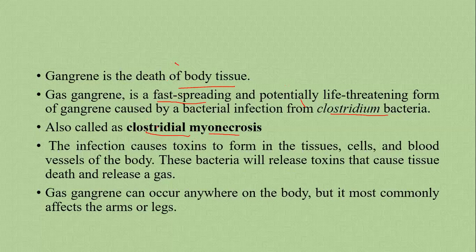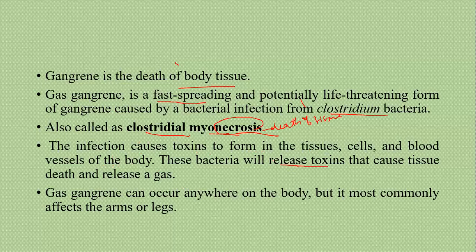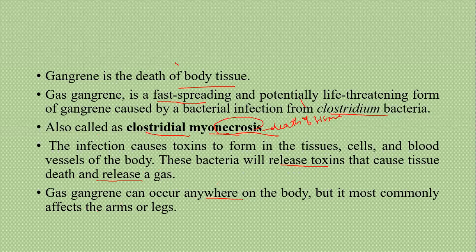The infection causes toxins to form in the tissues, cells, and blood vessels of the body. This bacteria will release toxins that cause tissue death and release a gas — that's why it is called gas gangrene. Once infection occurs, the bacteria release toxins causing tissue death as well as gas. It can occur anywhere on the body but most commonly affects the arms and legs.